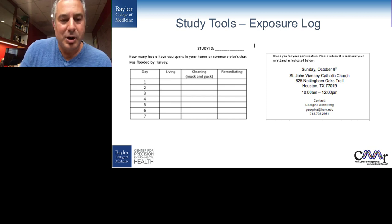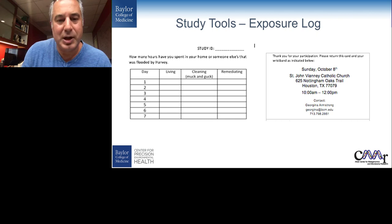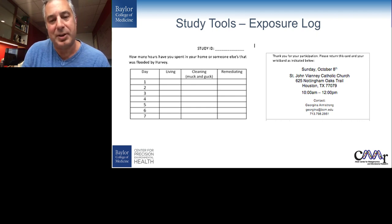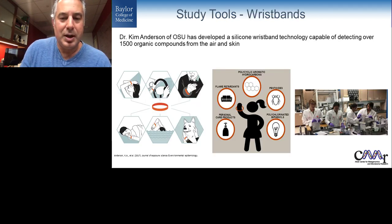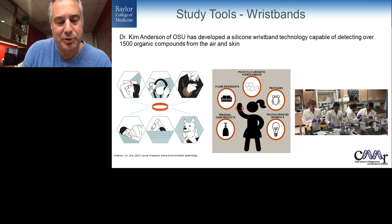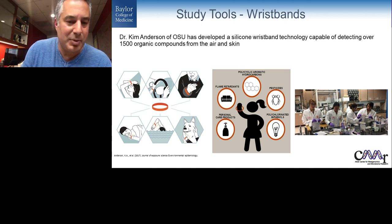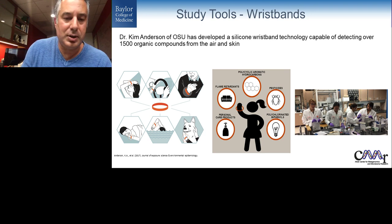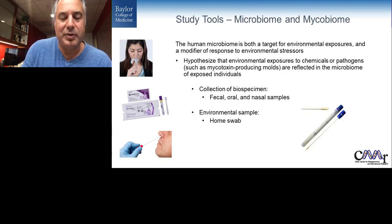Dr. Anderson has developed a wristband that can passively sample over 1,500 organic compounds it's exposed to. As you wear it, the wristband takes in chemicals you're exposed to as well as what your body secretes through the skin — looking at both the exposure and some of the response to that exposure. This is very interesting data that can now be correlated with our microbiome data and questionnaire data. Home samples were also collected from those under current and constant exposure.